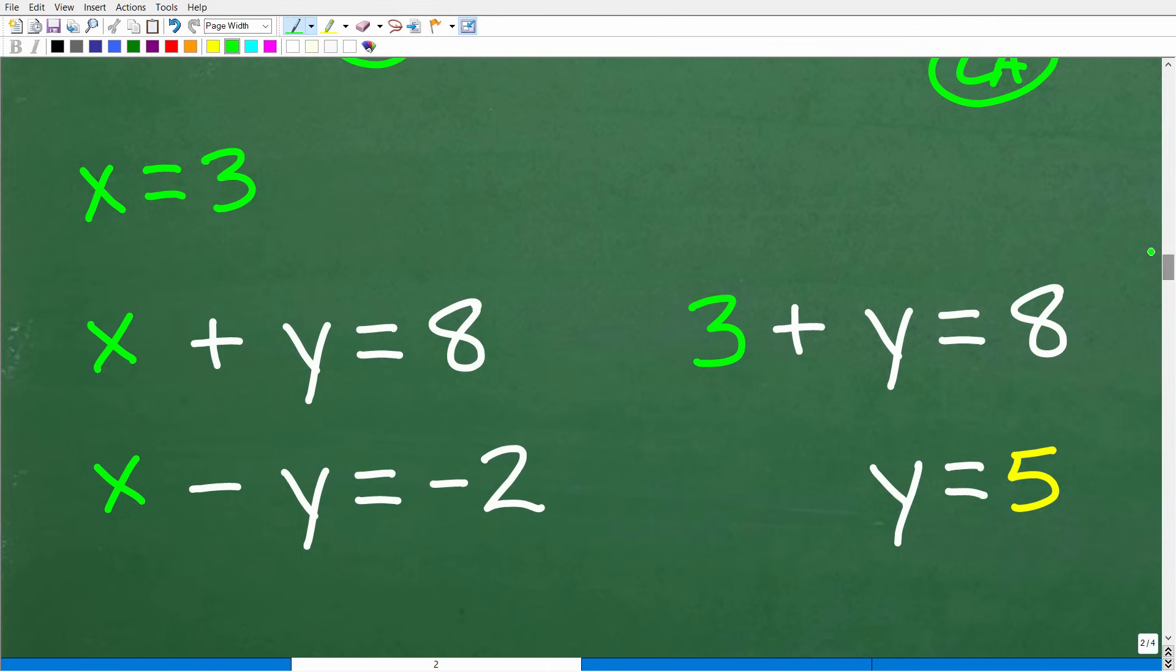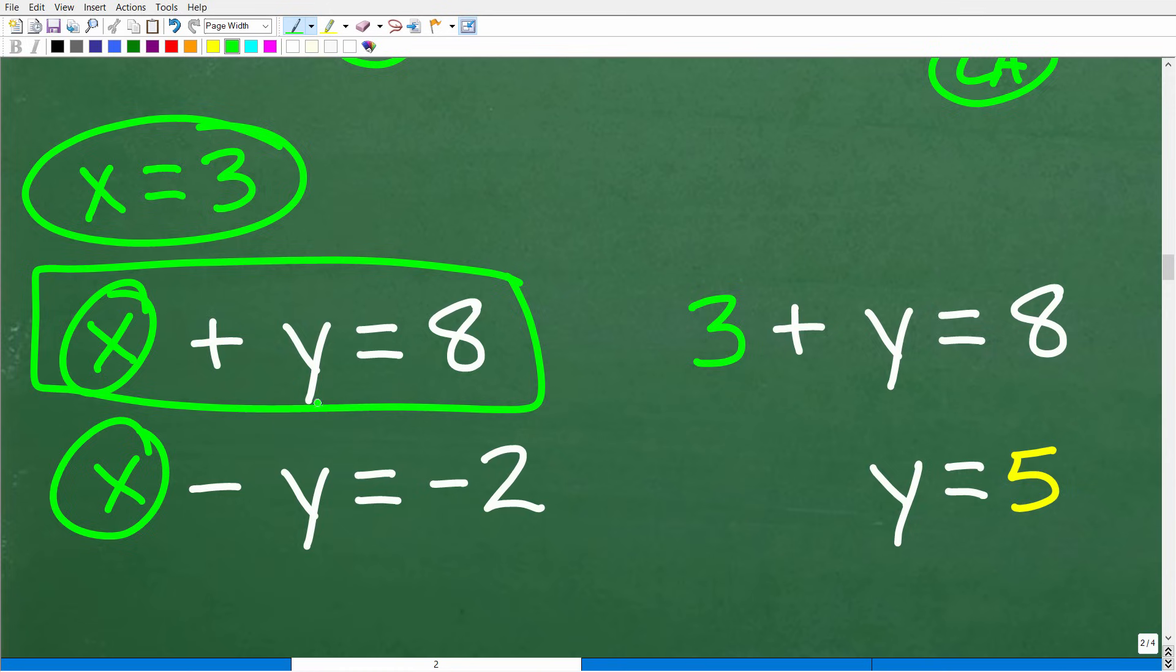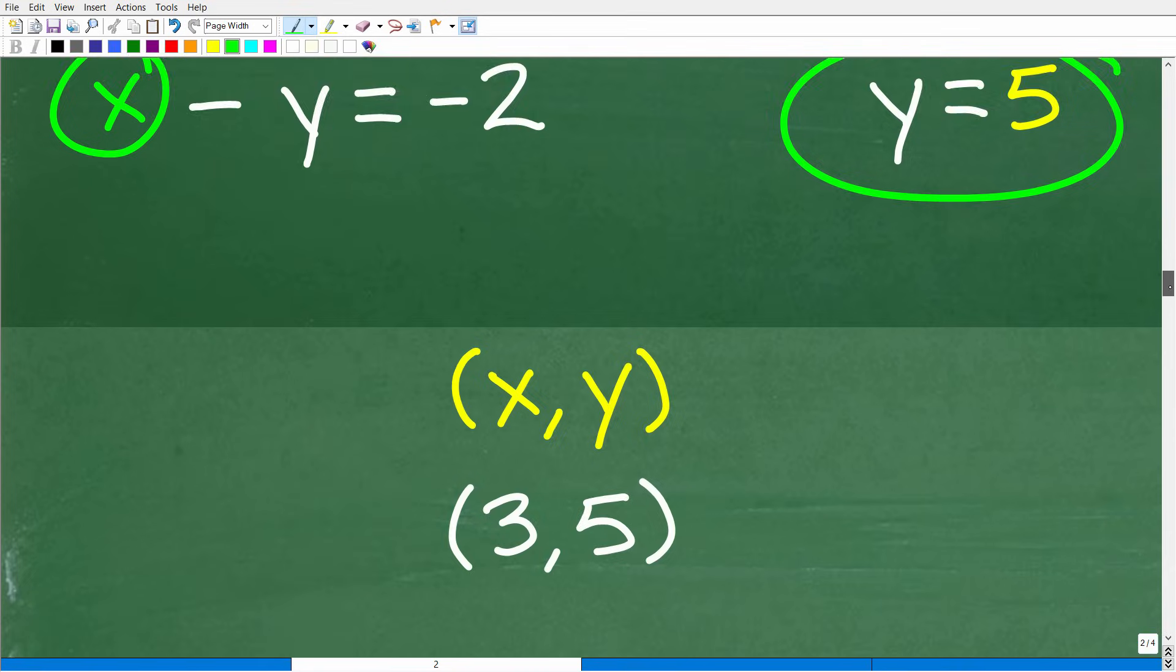So x is equal to 3. That is what the answer is for x. So how do we find y? Well, we have two equations, x plus y is equal to 8, and x minus y is equal to negative 2. So I can replace this x or this x. It doesn't make a difference. I'll choose this equation. Of course, this equation will be a little bit easier to solve for y, right? So now that we know x is 3, we're going to replace this x with 3. So we have 3 plus y is equal to 8. So to solve this equation for y, all we have to do is subtract 3 from both sides of the equation, and we have y is equal to 5.